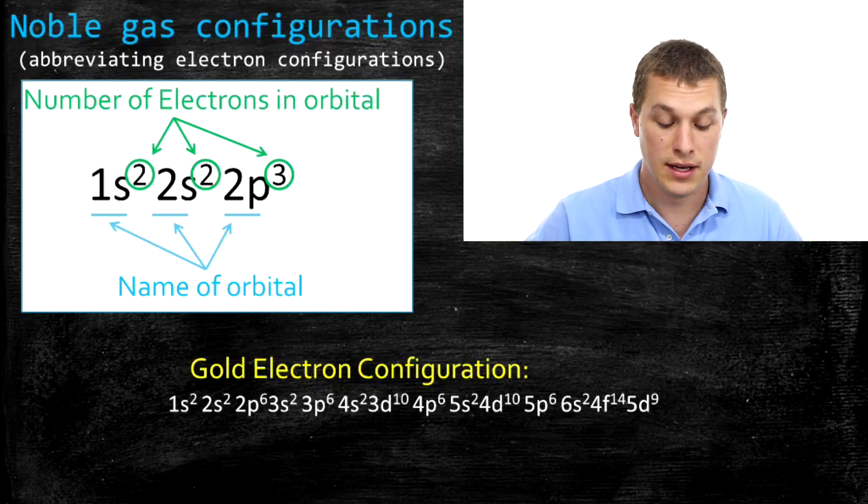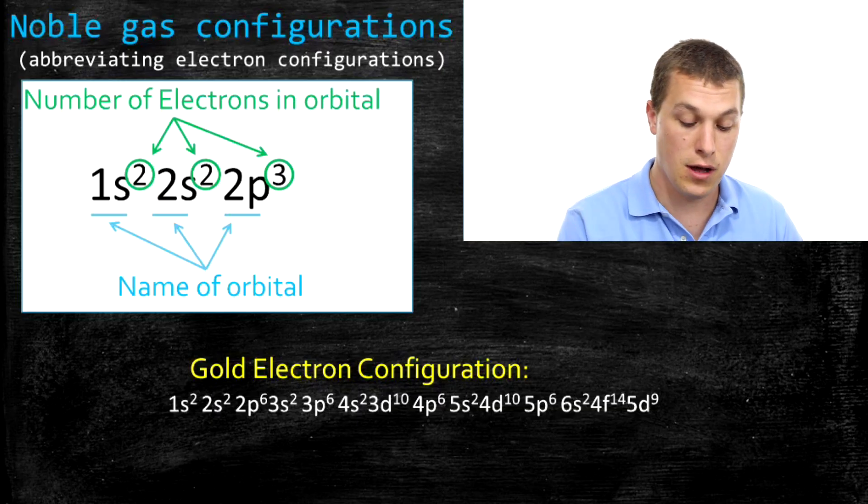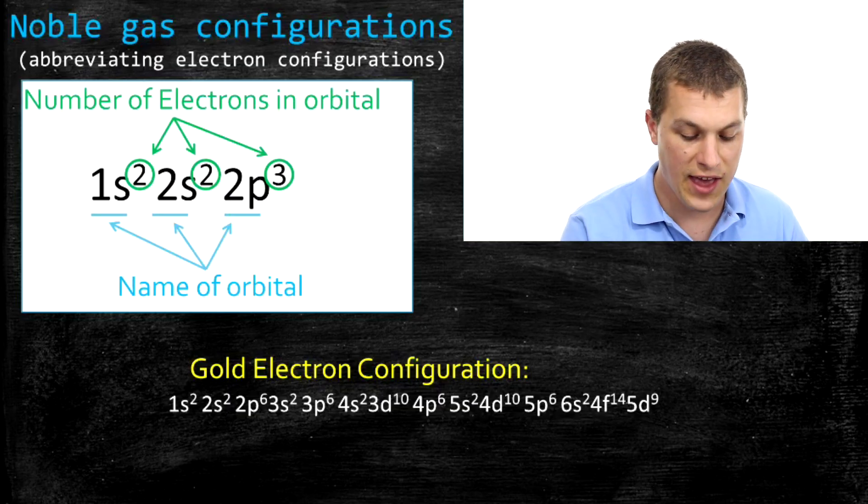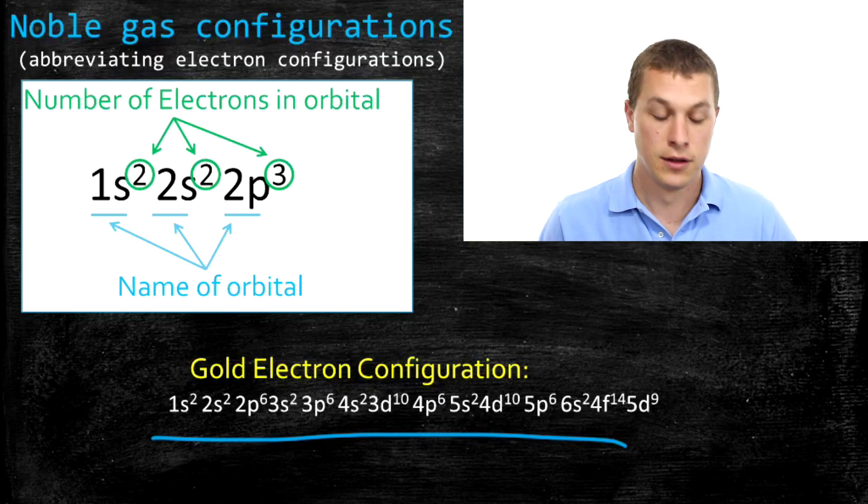And the reason you'd want to do that is take a look below. You can see this long string of letters and numbers, and that turns out to be the electron configuration for gold. And nobody wants to write that, that's a pain in the butt. So what we do is we shorten it with noble gas configurations, and I'll show you how to do that in this video.